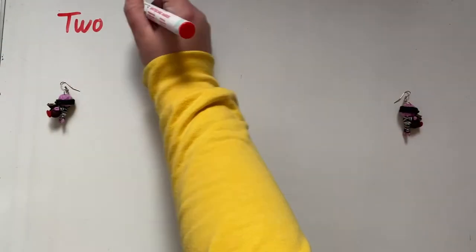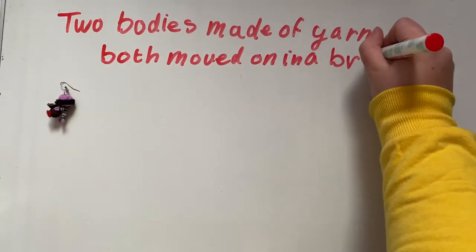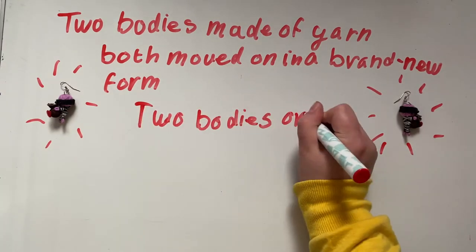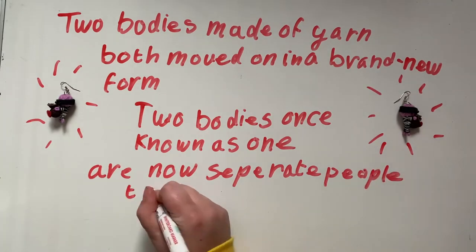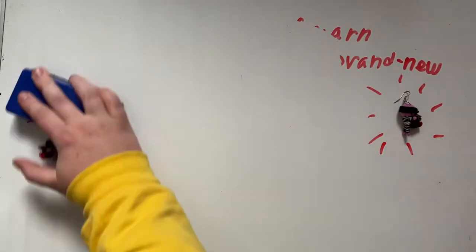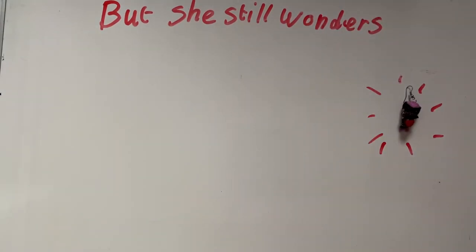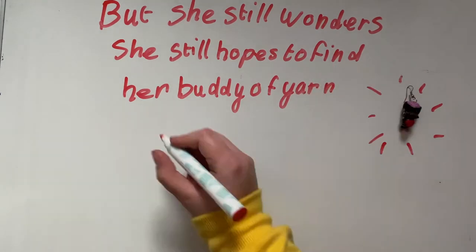Two bodies made of yarn both move on in a brand new form. Two bodies once known as one are now separate people to everyone. But she still wonders, she still hopes to find her body of yarn who ran out of her sight.